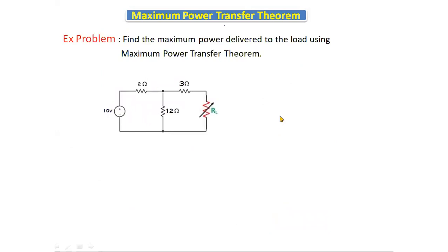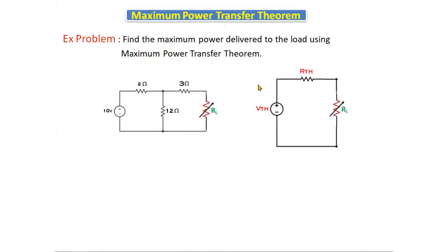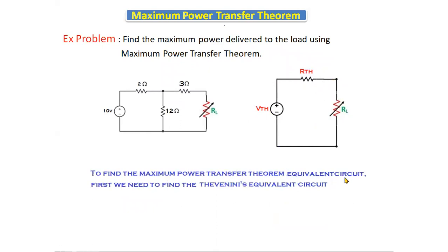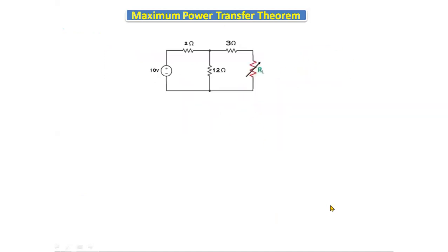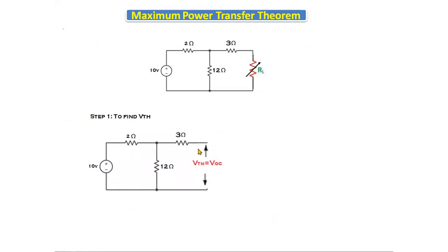Now we will see an example problem. Find the maximum power delivered to the load using the Maximum Power Transfer Theorem. Before applying the theorem, we first need to find the Thevenin's equivalent circuit — a combination of Vth in series with Rth. To find Vth, we open-circuit the load resistance and find the voltage across the open-circuit terminals.